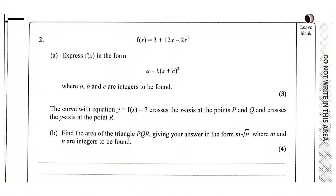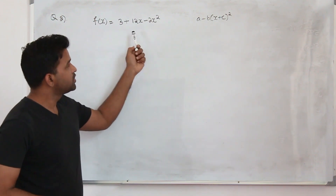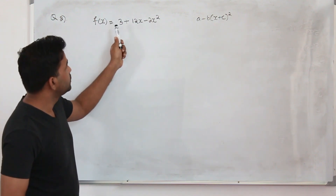Question number two: f(x) = 3 + 12x - 2x². Part a: express f(x) in the form a minus b(x + c)² where a, b, c are integers. This question has three marks. We are given a quadratic function and need to write it in this form.